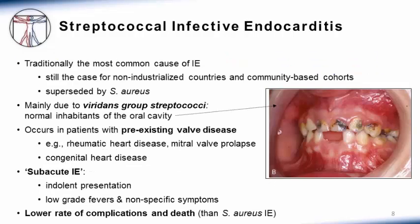Streptococci have traditionally been the most common cause of infective endocarditis. This is still the case for non-industrialized countries and community-based cohorts. However, in industrialized countries such as the US, streptococci have been superseded by staph aureus. The type most commonly involved are viridans group streptococci, which are normal inhabitants of the oral cavity. Streptococcal infective endocarditis typically occurs in patients with pre-existing valve disease such as rheumatic heart disease, mitral valve prolapse, and congenital heart disease. It is a classic example of subacute endocarditis with an indolent presentation, low-grade fevers, and nonspecific symptoms.